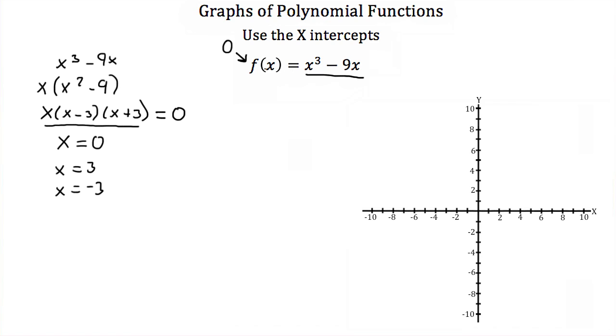Now, remember, this is set to 0, this equation, and if we thought of this as y is equal to x³ minus 9x, that would mean y would be equal to 0, and that makes each of these values we found an x-intercept, because y is equal to 0. So we would have the points (0, 0), (3, 0), and (-3, 0).